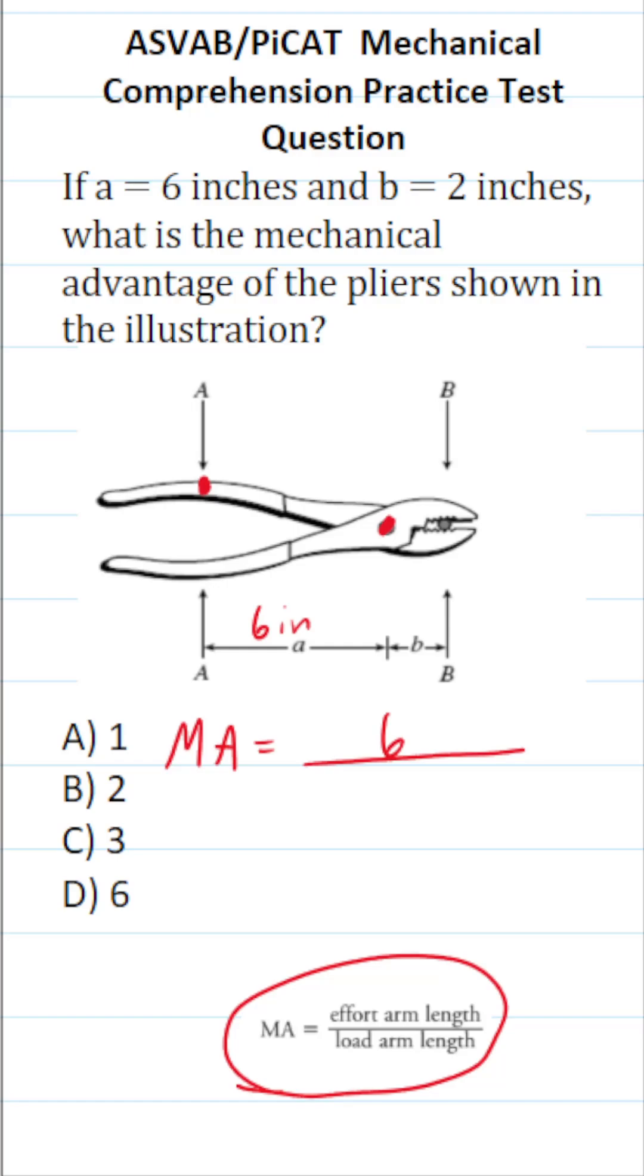So here's the load arm length. That's where you actually grab onto something with the pliers. And it's going to be the distance from the load to the fulcrum.